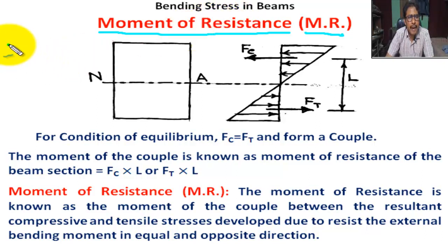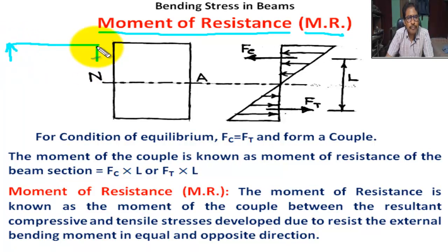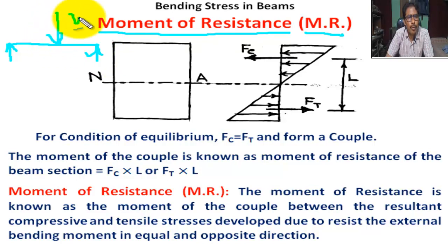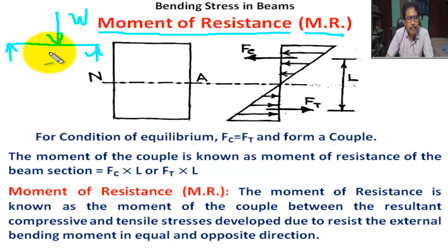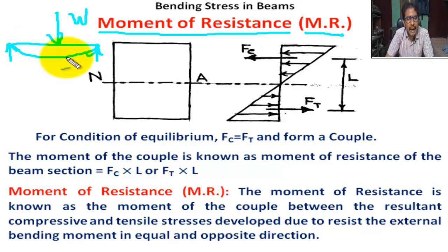If a simply supported beam supports on both sides and a point load W acts at the center in the downward direction, the beam bends downward into a curve.